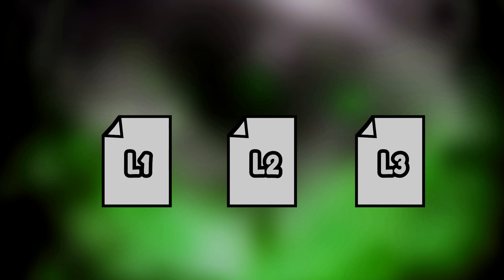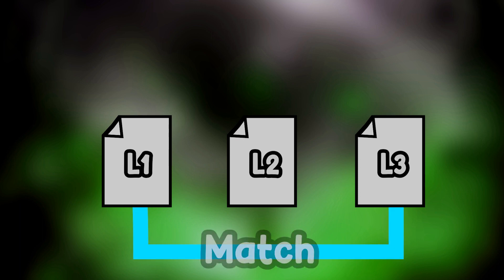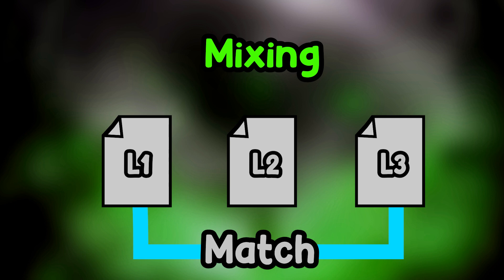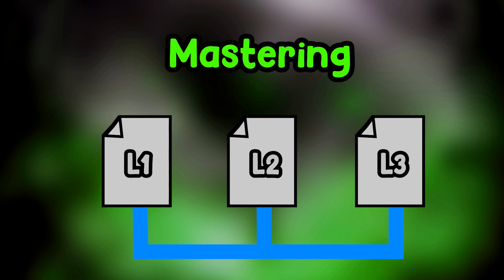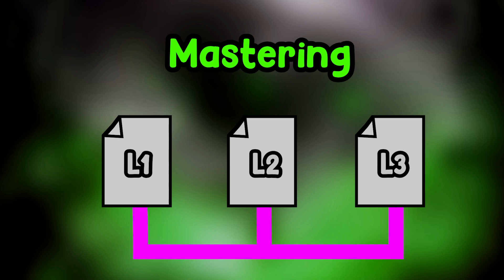Let's say we have separated our project into three layers and we don't like the colors of any of them. Suppose the colors of layer one match the colors of layer three. In the first step, mixing, we focus on individual layers and try to match them with the other layers. Since layer one and three already match, we focus on layer two and try to match it with them. After that, in the second step called mastering, since all layers now match each other but the overall look still doesn't look good, we change the colors of all of them at the same time — and because we're changing them together, they will still match each other.